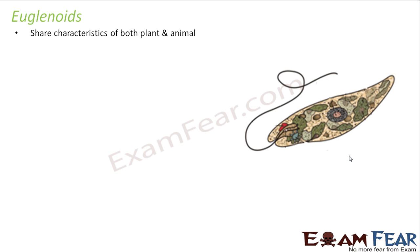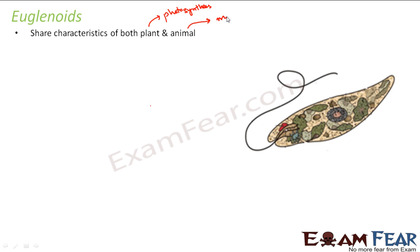Euglenoids share characteristics of both plant and animal. They are similar to plants because they can perform photosynthesis due to the presence of the pigment chlorophyll. Their similarity with animals is that they are mobile — plants are not mobile, but animals can move from one place to another. So Euglenoids are mobile due to the presence of flagella.